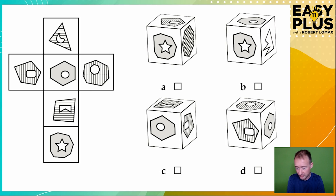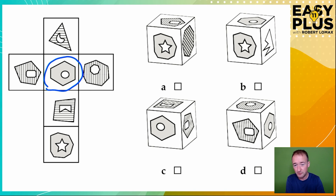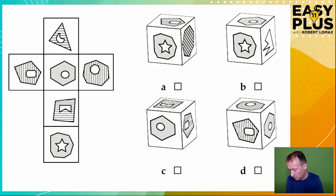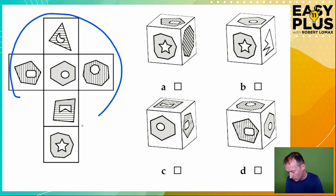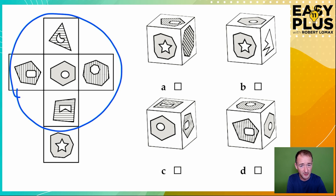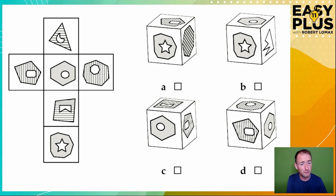A really good place to start is with the central figure on our cube net. The reason for that is that we can see all of the other figures that border it, and that makes it really easy to use that to rule out some possibilities. So let's look for every place where we see that figure in our answers.